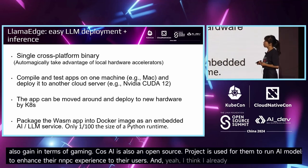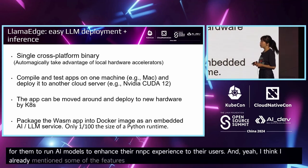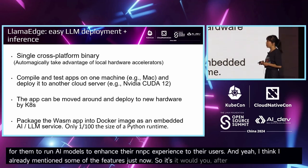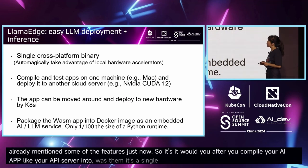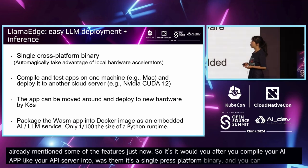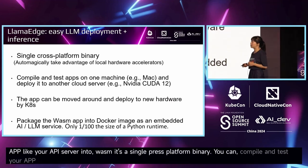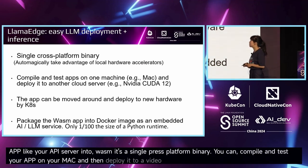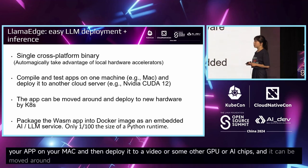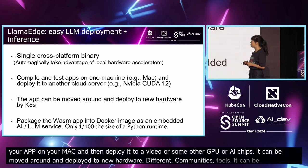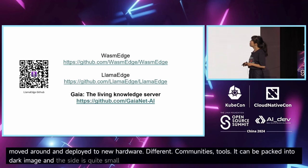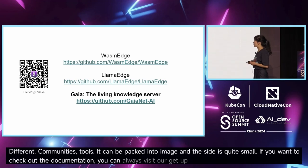After you compile your AI app — like your API server — into WASM, it's a single cross-platform binary. You can compile and test your app on your Mac, then deploy it to NVIDIA or other GPUs or edge chips. It can be moved around and deployed to new hardware using community tools, and it can be packed into a Docker image at a quite small size. Check out our GitHub for documentation.